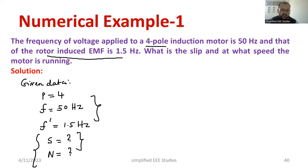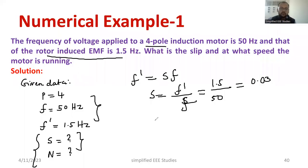So from this data, I know F dash and F. You already know that the frequency of rotor current, just before we have done the derivation, F dash is equal to S into F. From this I can easily calculate the slip. What is slip? F dash divided by F. So what is F dash? F dash is 1.5 hertz upon 50. What is 1.5 by 50? Take your calculator and do that. You should get 0.03. So I have got the value of slip. So this part is over.